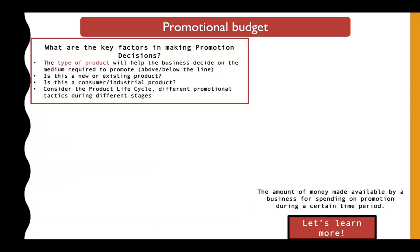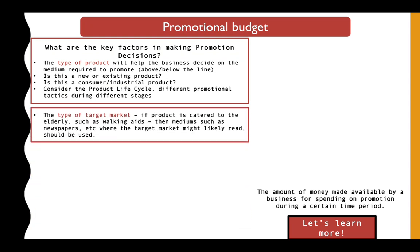Let's look at the key factors that help make a promotional decision. The first is the type of product the business is going to promote — whether it will use above-the-line methods, whether it's a new or existing product, whether it's a consumer product or a business product, and which stage of the product life cycle it falls in.